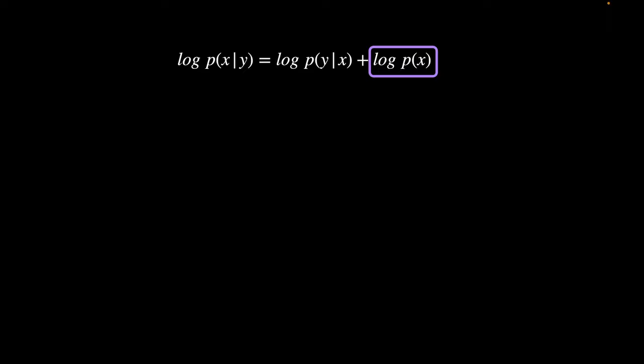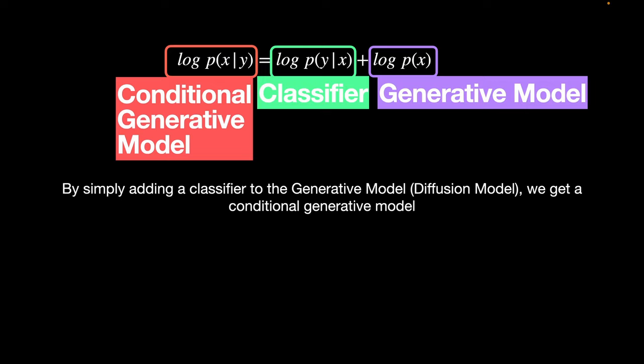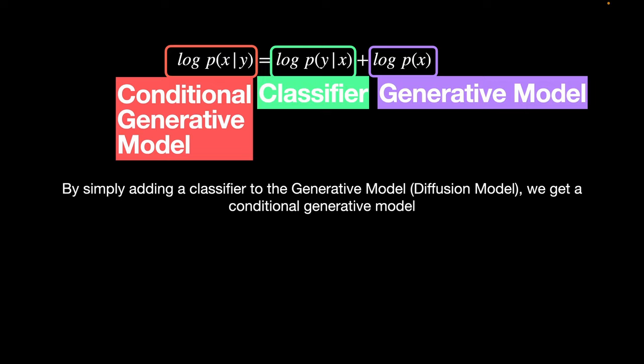The rightmost term is simply the distribution of the input data x. In other words, it's a generative model, because if we simply sample from this distribution of x, we can get outputs similar to that of x. The middle term represents a discriminative classifier as it says, given an input x, give me the probability of class y. Now the leftmost term is the conditional generative model as it says, given a label y, give me a generated sample x from the distribution. So, long story short, by simply adding a classifier to the generative model, we get a conditional generative model. Now this is the exact idea of classifier guidance.